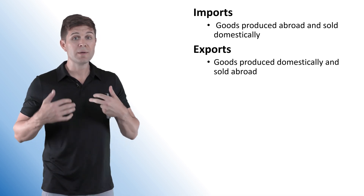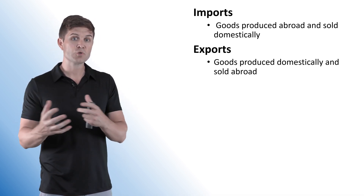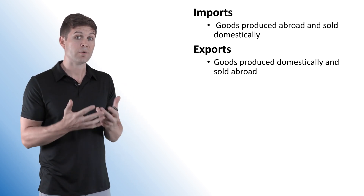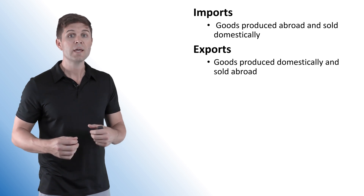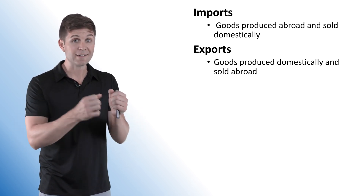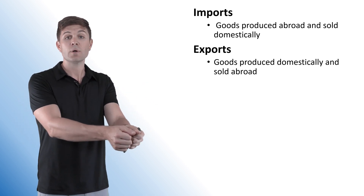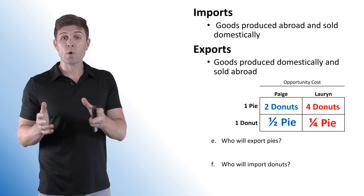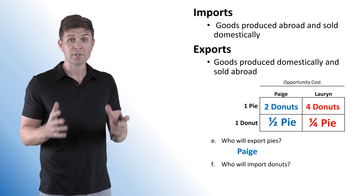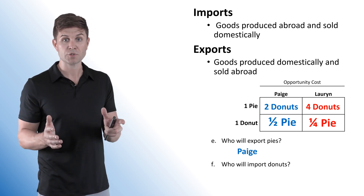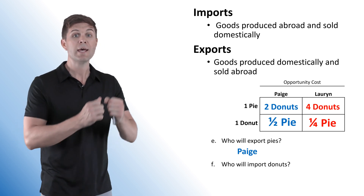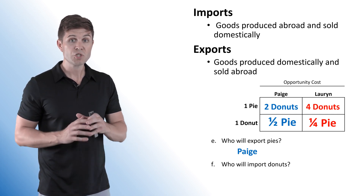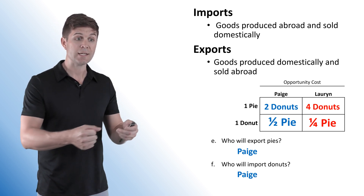A note on imports and exports: imports are what we bring into our country, or in trade problems, the good being received. Exports are what we ship out. The person with the comparative advantage in a product exports it; the person without the comparative advantage imports it. So Paige, who has the comparative advantage in pies, will export pies. Lauren has the comparative advantage in donuts, so she exports donuts — meaning Paige imports the donuts.